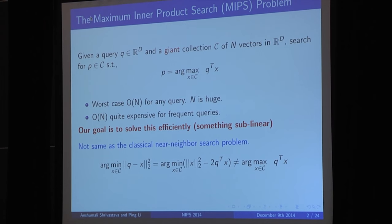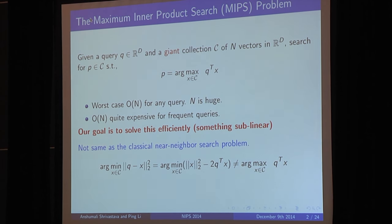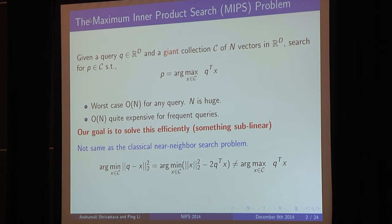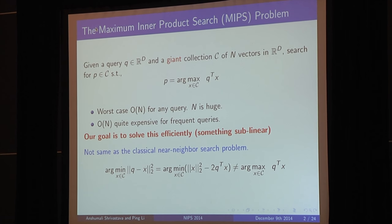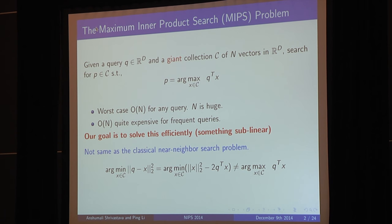Thanks, NIPS, for the great encouragement. So this is joint work with my great advisor, Ping. And I'll tell you how to solve maximum inner product search. So this is the formal setting of the problem I'm interested in. We are given a giant collection of vectors in some R to the power d, and I'm given a query, and I'm interested in searching this collection for an element x which maximizes the inner product. So this is not an NP-hard problem, it's worst-case linear.